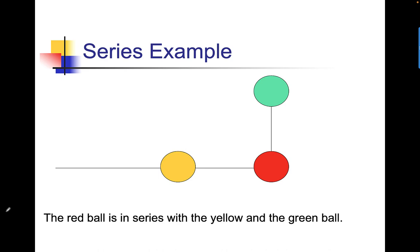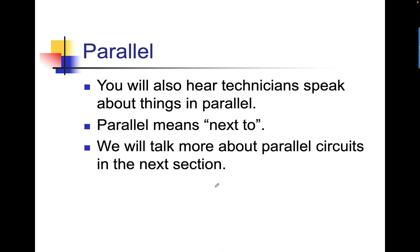The red ball is in series with the yellow and the green ball. In other words, to follow this path of wire, to get to the red ball, you either have to go through the yellow or the green. They're in series with each other.